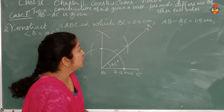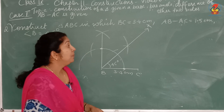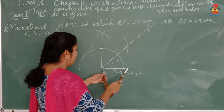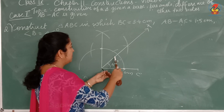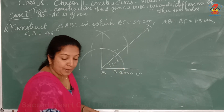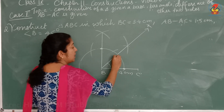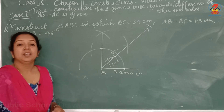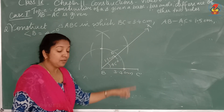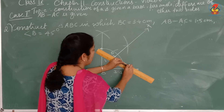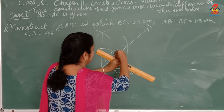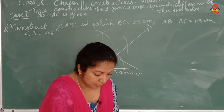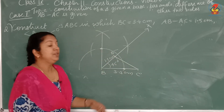The difference AB minus AC is 1.5 cm. Mark a point D on ray BX, 1.5 cm away from B. Then join D and C.